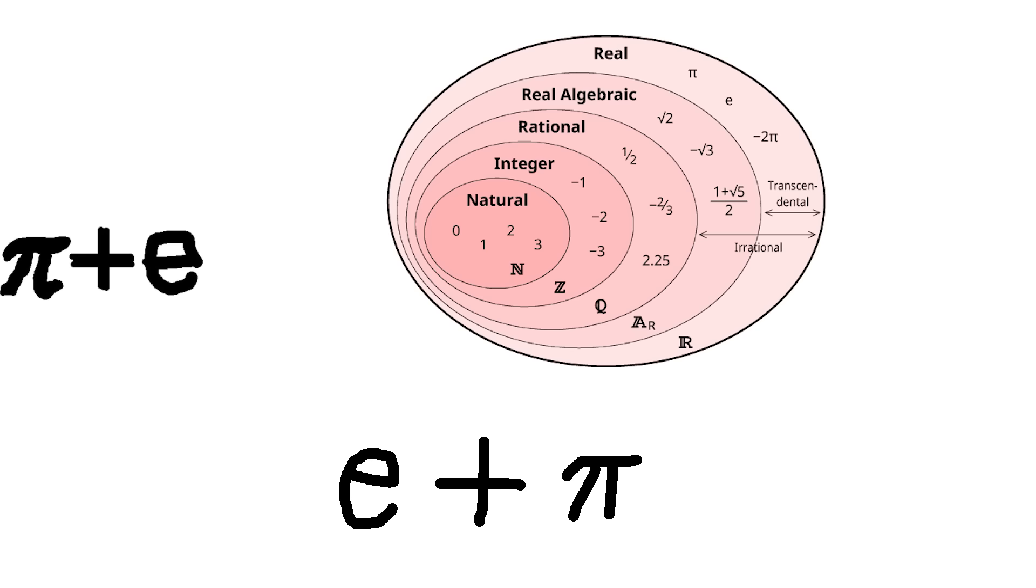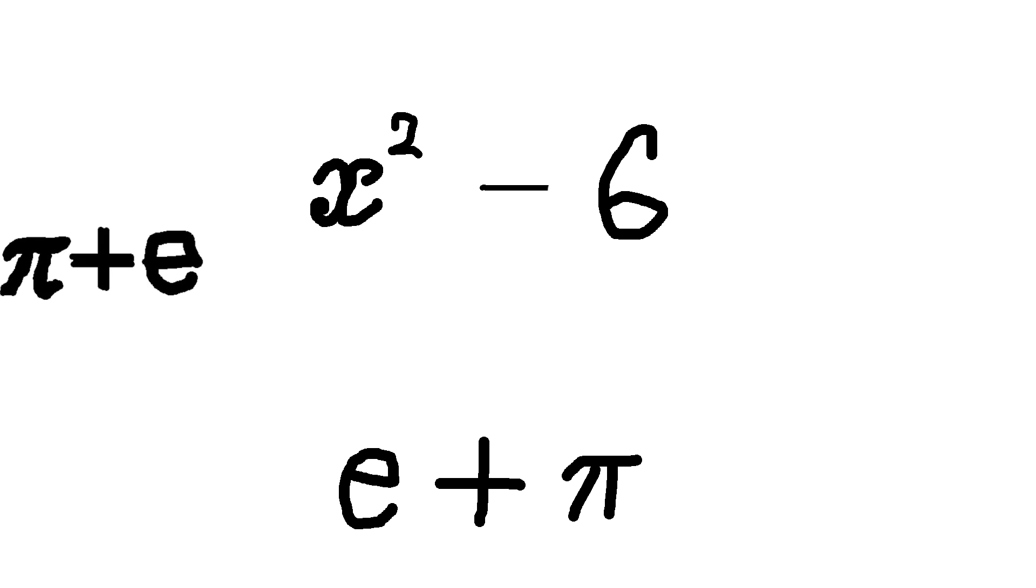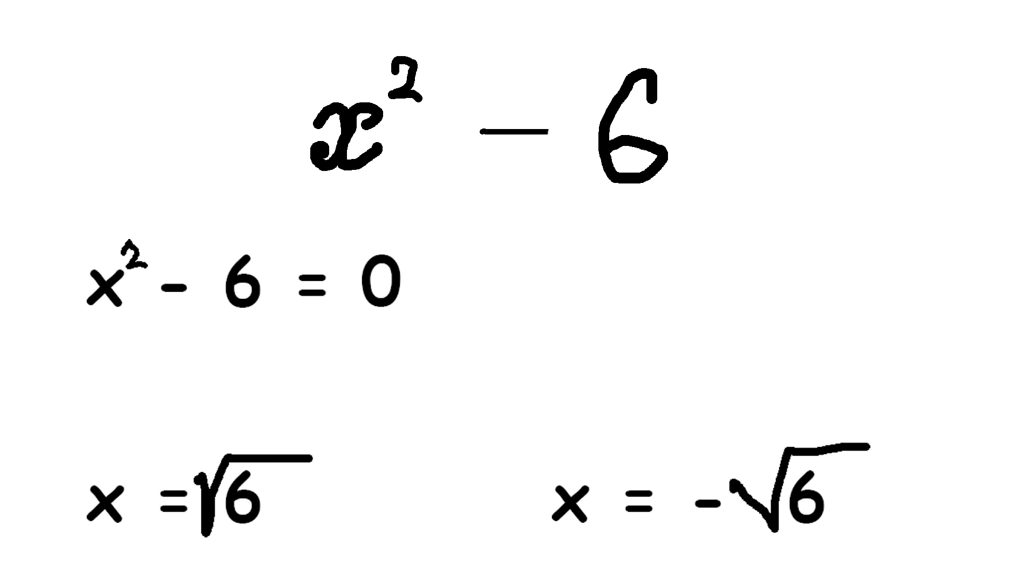The definition: a real number is algebraic if it's the root of some polynomial with integer coefficients. For example, x squared minus 6 is a polynomial with integer coefficients, since 1 and negative 6 are integers. The roots of x squared minus 6 equals 0 are x equals square root of 6 and x equals negative square root of 6. So that means square root of 6 and negative square root of 6 are algebraic numbers.